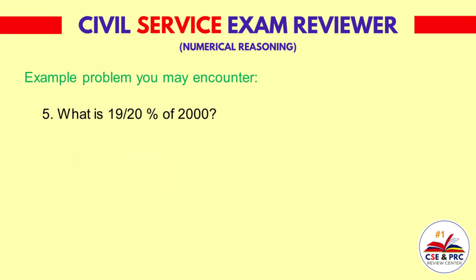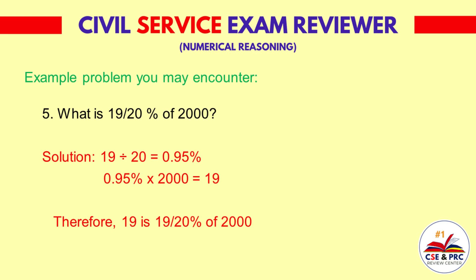Number 5: What is 19/20 percent of 2,000? Solution: 19 divided by 20 equals 0.95 percent. 0.95 percent times 2,000 is equal to 19. Therefore, 19 is 19/20 percent of 2,000.